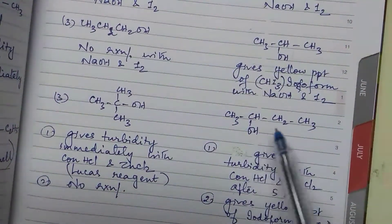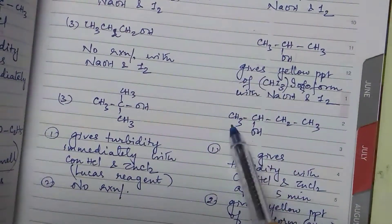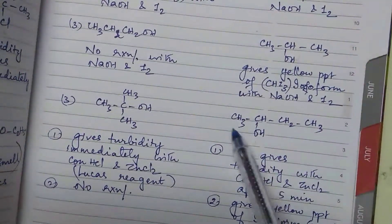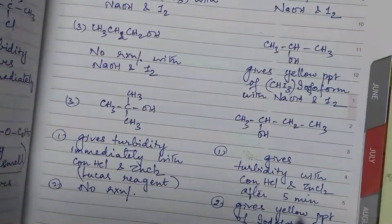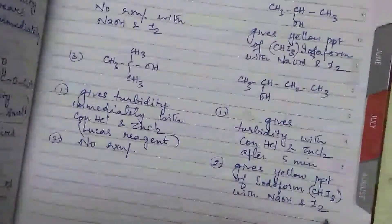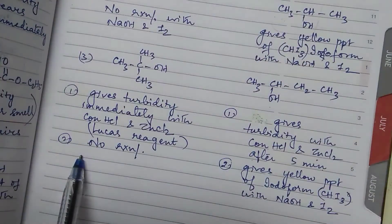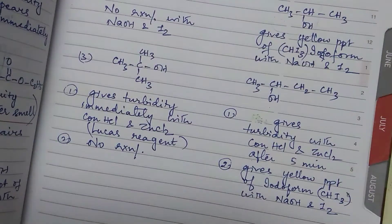Then this CH3, CHOH, functional carbon ke saath CH3 attached. So this will give iodoform test. So it gives yellow precipitate of iodoform with NaOH and iodine whereas this will not show any reaction. So these are a few examples for distinguishing tests. We will see more and more.